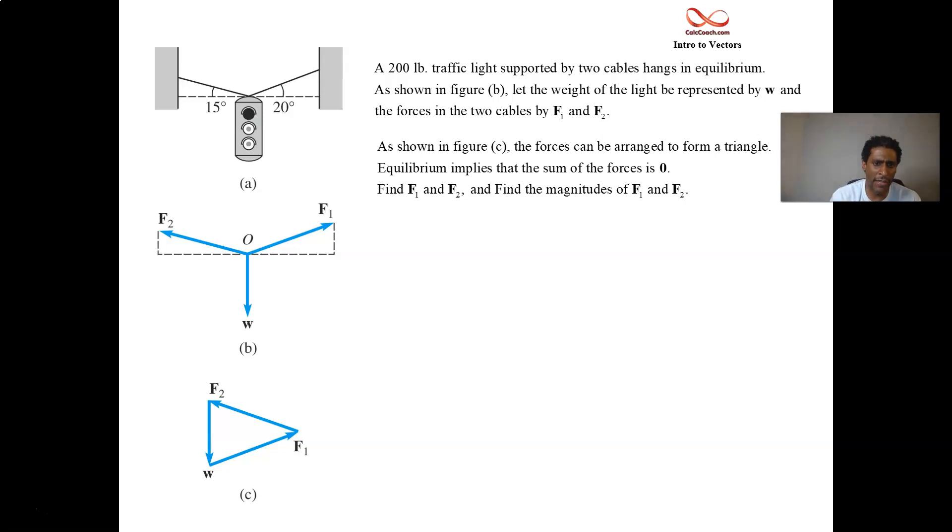Our job is to figure out the actual magnitude of the forces in the cables, F1 and F2. Find mag F1 and find mag F2. Because when it hangs in equilibrium, the sum of the vectors is going to be zero, the resultant vector.